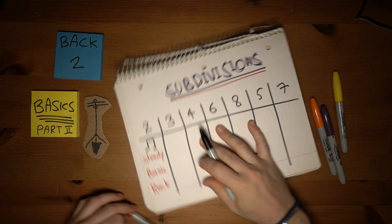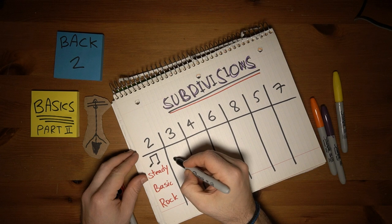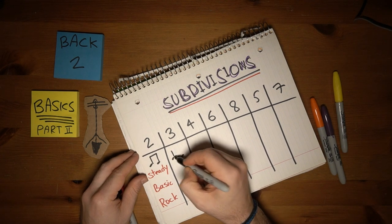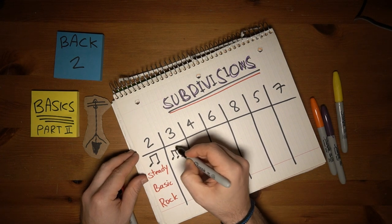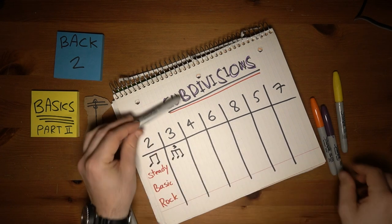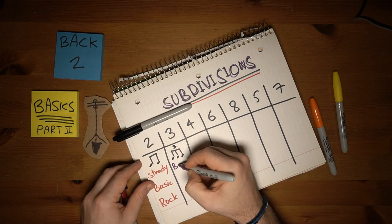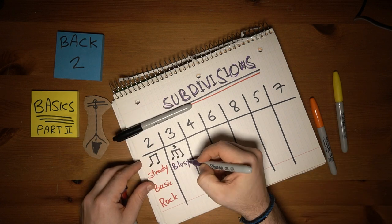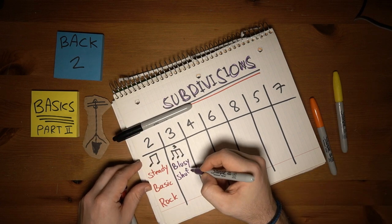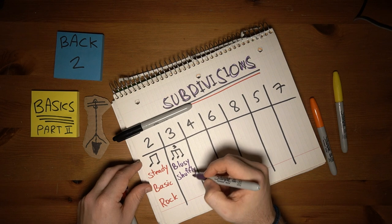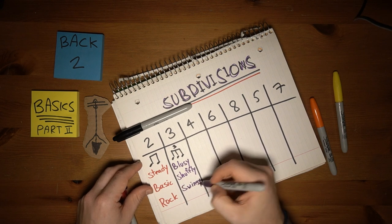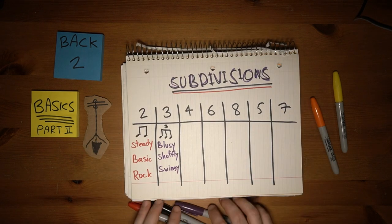Next would be 3. If we divide a quarter note into 3 equal parts, that's called a triplet. To my ears, this sounds bluesy, shuffly, and swingy. By the way, this can very easily be confused with a 6/8.